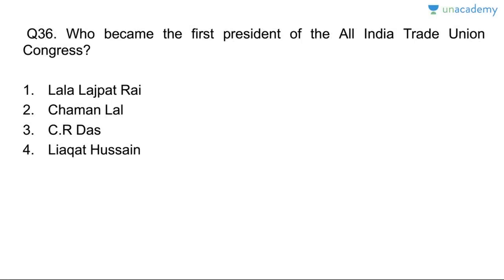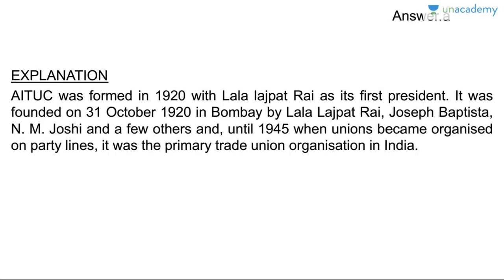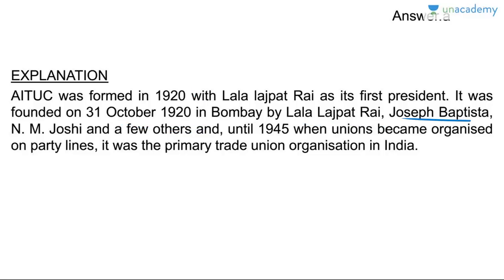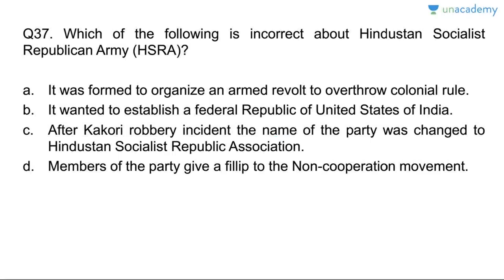Question thirty-six: who became the first president of the All India Trade Union Congress? Lala Lajpat Rai. AITUC was formed in 1920 with Lala Lajpat Rai as its first president, founded on 31st October 1920 in Bombay by Lala Lajpat Rai, Joseph Baptista, NM Joshi, and others. Until 1945, when unions became organized along party lines, it was the primary trade union organization in India.